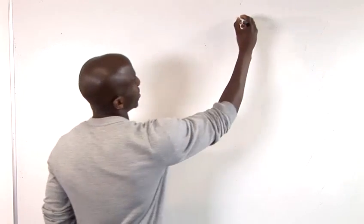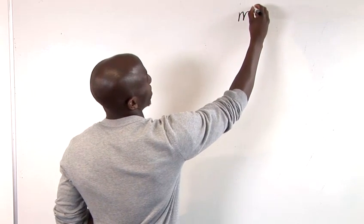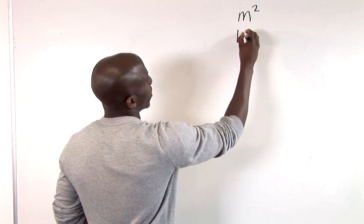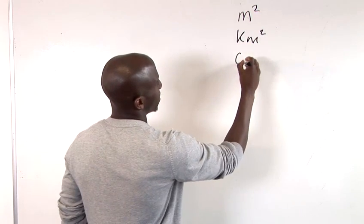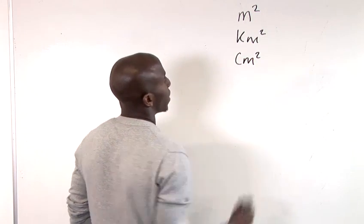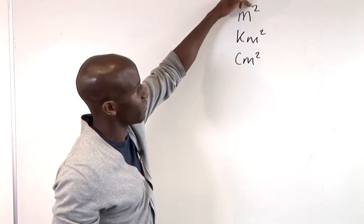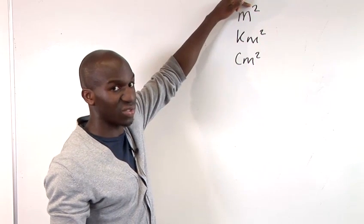Now commonly you would find the units of surface area denoted as metre squared, kilometre squared, centimetre squared and it's basically this number two here that tells you you have two dimensions.